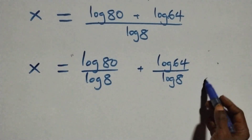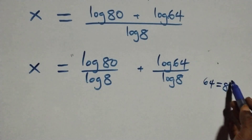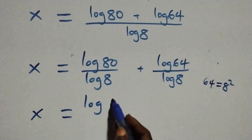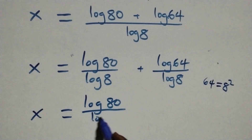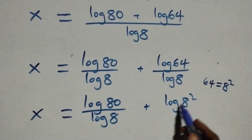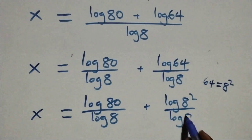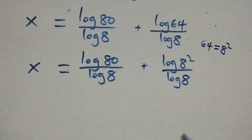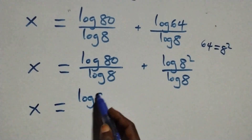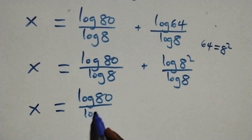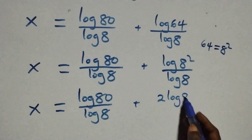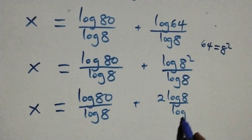Also, 64 can be written as 8 times 8, that's 8 squared. So what we have becomes x equals log 80 over log 8 plus log 8 squared over log 8. Then we apply the power rule of logarithms: the 2 comes down, giving x equals log 80 over log 8 plus 2 log 8 over log 8.